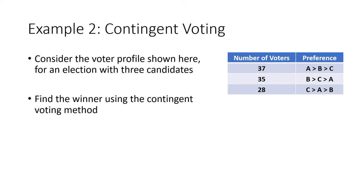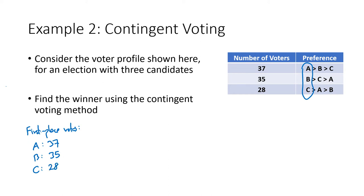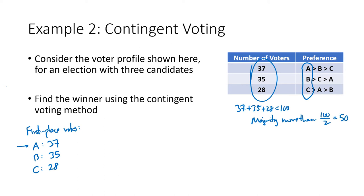In a second example with three candidates, we count first place votes: A gets 37, B gets 35, C gets 28, for a total of 100 voters. A majority requires more than 50 votes. A has the most first place votes but only 37, not 51, so A is not yet the winner. We eliminate C — the candidate with the fewest first place votes — leaving a matchup of A versus B.